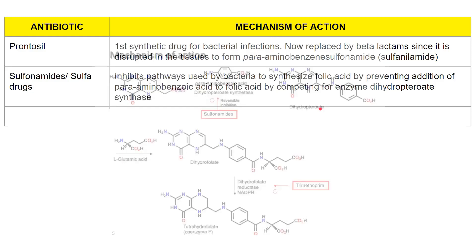Lastly we have gentamicin. Gentamicin, like the other aminoglycosides discussed earlier, prevents protein synthesis. It binds to the 30S subunit of the bacterial ribosome.